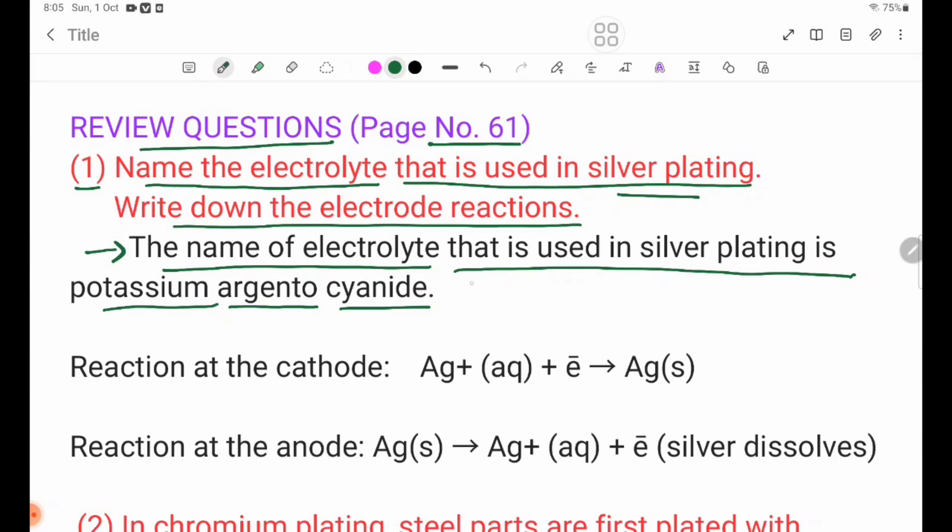We will write down the electron: K Ag(CN)2 aqueous. Reaction at the cathode: Ag+ plus electron forming Ag solid. Reaction at the anode: Ag solid forming Ag+ plus electron.